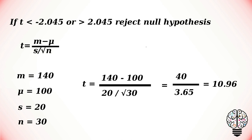The rule is: if t is less than −2.045 or greater than 2.045, we reject the null hypothesis. As our t value of 10.96 is greater than 2.045, we reject the null hypothesis. Our conclusion is that the medication has affected intelligence.